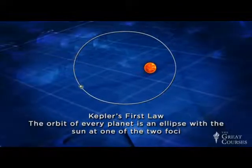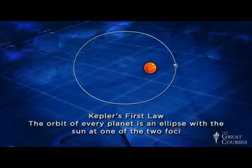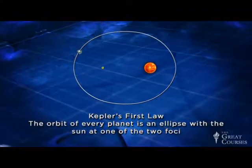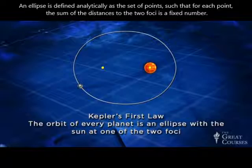The orbit of every planet is an ellipse with the Sun at one of the two foci. An ellipse is defined analytically as the set of points such that for each point, the sum of the distances to the two foci is a fixed number.